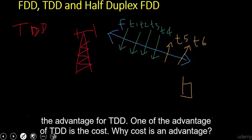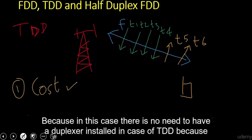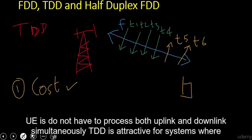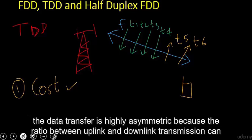One advantage of TDD is cost. Cost is an advantage because there is no need to have a duplexer installed in TDD, since UEs do not have to process both uplink and downlink simultaneously.